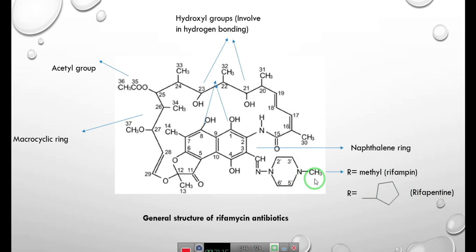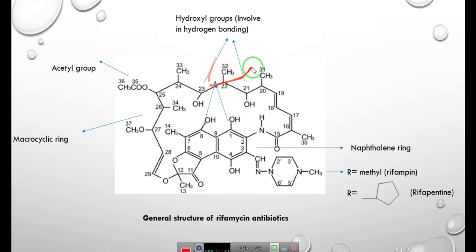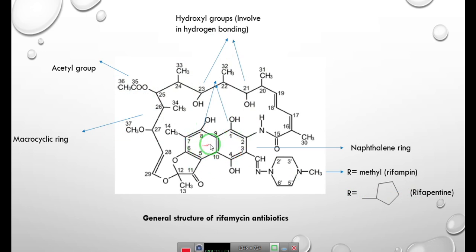Due to chances of relapse and emergence of resistant strains associated with poor patient compliance, reducing dosing frequency is expected to increase compliance. In the general rifamycin structure, changes at the R position give rifampicin (methyl group) and rifapentine (cyclopentyl ring). In rifapentine, a pentacyclic ring is present. Hydroxyl groups are responsible for producing hydrogen bonding with the enzyme.